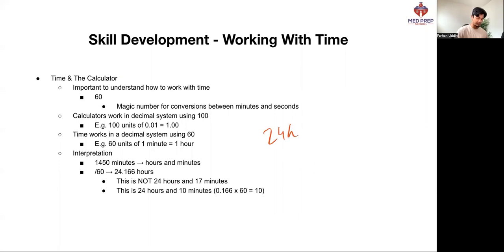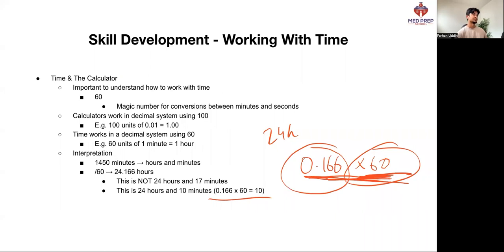But in reality, this is 24 hours and an additional 0.166 of an hour. So if we want to get that value in minutes, what we can do is get this hour value multiplied by 60 to get our minute value, which in this case would give us 10. Therefore our answer would be 24 hours and 10 minutes.